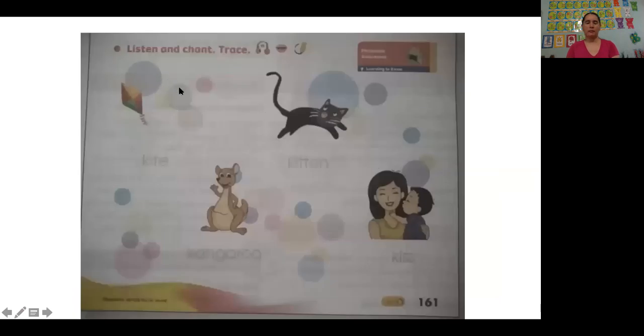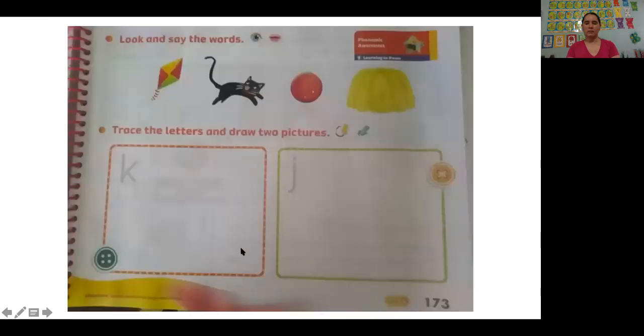For activity for today, it says listen and trace. This is kitten, kangaroo, kiss. You're going to trace each one of these words here. Look and say the words, okay, kitten and ball, yellow. Trace the letter and draw two pictures. Here you are going to trace the letter and then draw one picture in each box, or two pictures. Aquí dice repita o diga el nombre de cada uno de estos objetos o imágenes y aquí me van a dibujar dos dibujos con la letra K y dos dibujos con la letra J pero en inglés, okay.